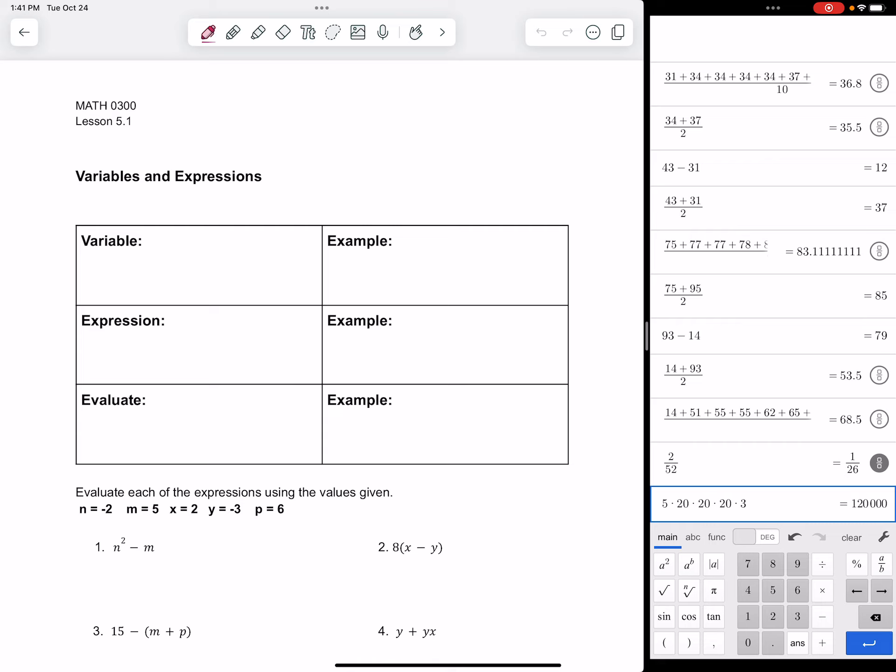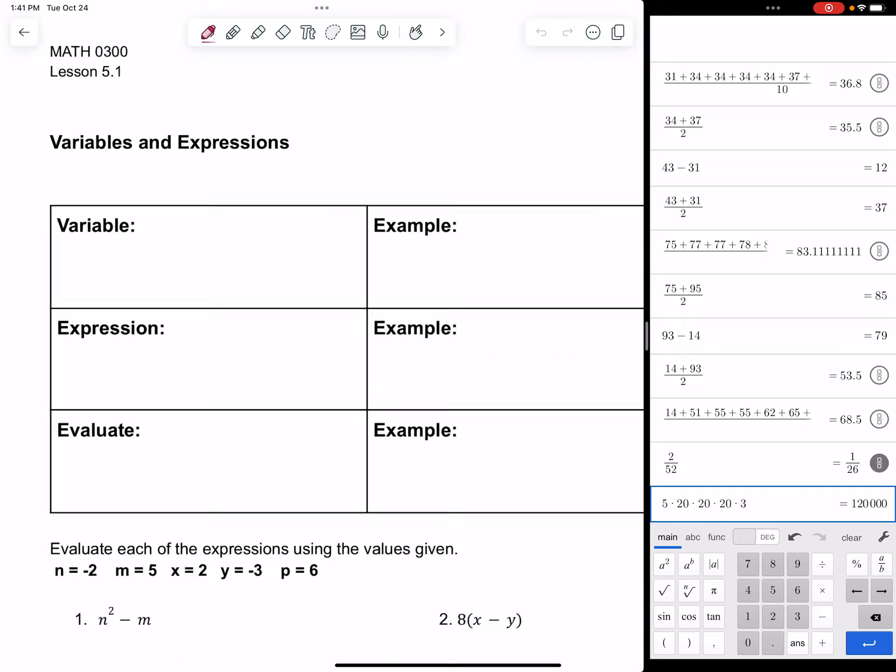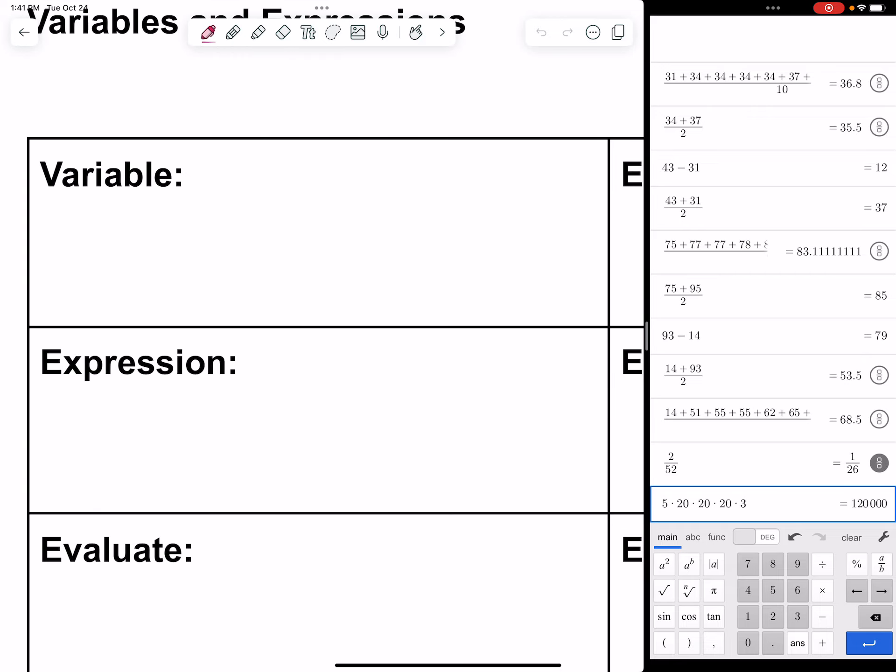Variables and expressions are the most basic parts of algebra that you can talk about. A variable is a letter that takes the place of a number.